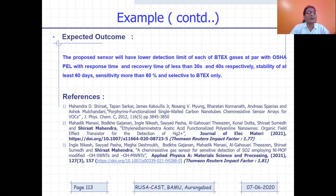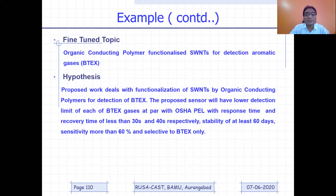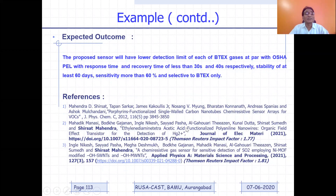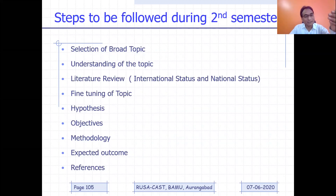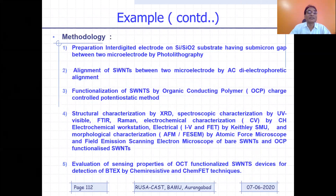The last point is expected outcome. You can see: 'The proposed sensor will have a lower detection limit of each of the BTEX gases at par with OSHA-PEL, with response and recovery time less than 30 and 40 seconds respectively, stability of at least 60 days, sensitivity more than 60%, and selectivity to BTEX only.' This is what I am expecting. And then references. So ultimately, this is what you will have to do: selection of broad topic, understanding of the topic, literature review with international and national status, fine-tuning of the topic, hypothesis, objectives, methodology, expected outcome, and references. This is what you have to do in semester two, and this is how we end unit three.